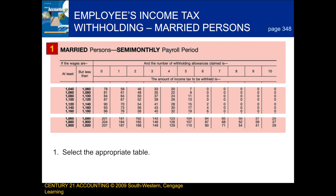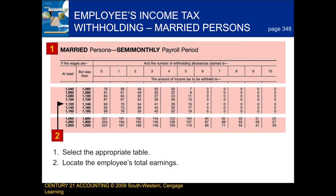Next, we locate the employee's total earnings. And finally, we determine the intersection of wages and also the number of allowances column.